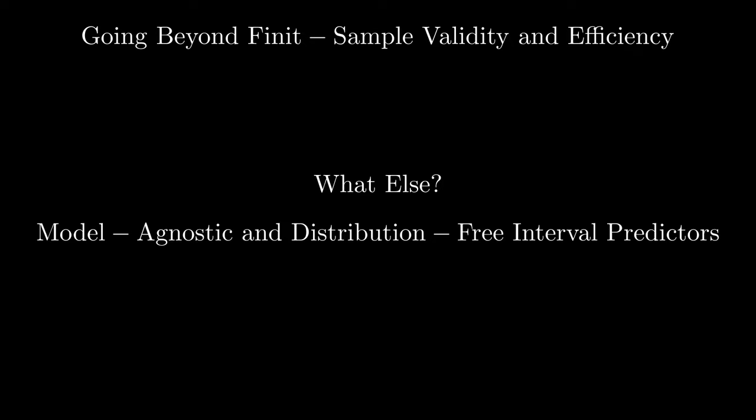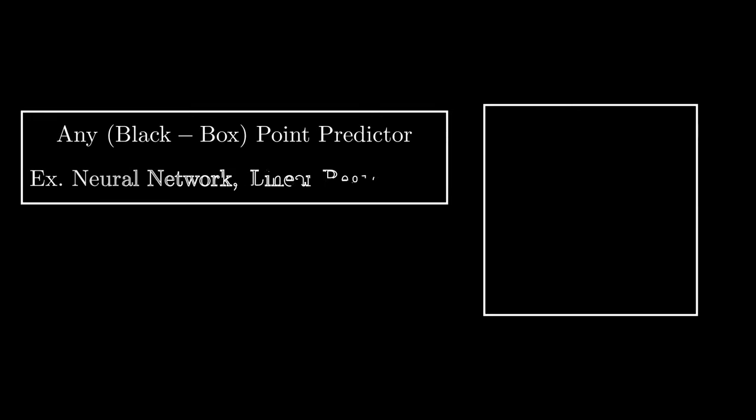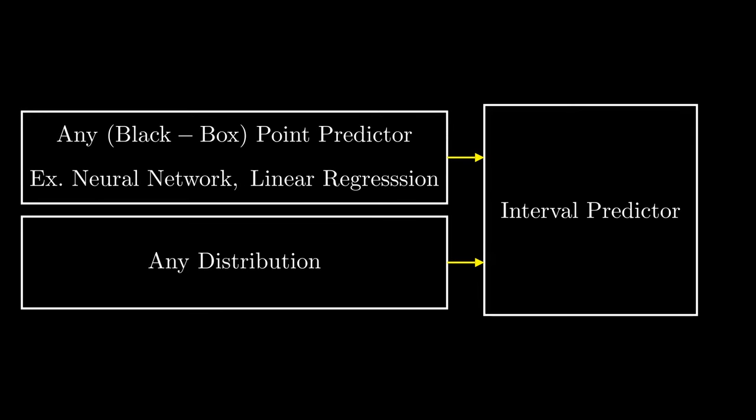A good interval predictor should not be bound by a specific point predictor or its details, or even a specific data distribution. In other words, it should not care what model was used to make the point predictions or what distribution the data follows. Instead, it should seamlessly be added to any point predictor, treating it as a black box.